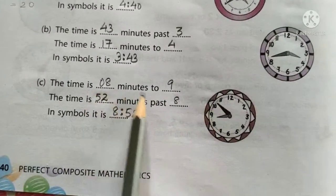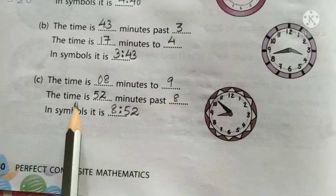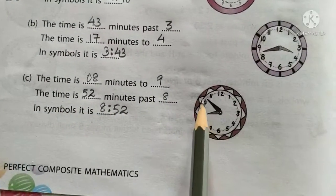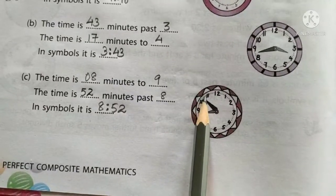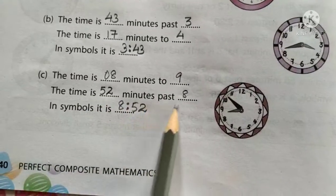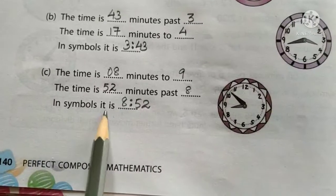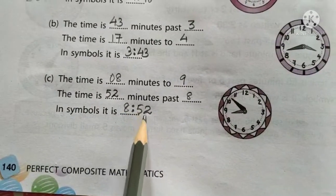The time is 8 minutes to 9. That is, the time will be 10 means 10 fives are 50. 50, 51, 52. So, 52 minutes past 8. In symbols, it is 8 colon 52.